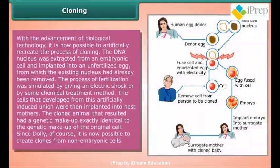In artificial cloning, the DNA nucleus is extracted from an embryonic cell and implanted into an unfertilized egg from which the existing nucleus has already been removed. The process of fertilization is then stimulated by an electric shock or chemical treatment. The cells that develop from this artificially induced union are then implanted into host mothers. The cloned animal that results has a genetic makeup exactly identical to the genetic makeup of the original cell.